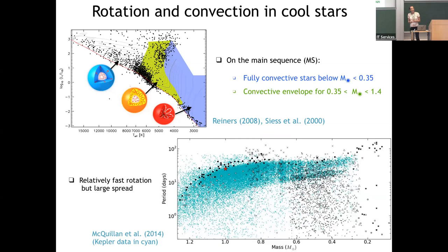Other stars also possess all the ingredients to produce magnetic fields, and we know that many stars are magnetic. This is a typical HR diagram with temperature on the x-axis and luminosity on the y-axis. The dots are stars, and the gray and black lines show the evolutionary tracks followed by stars in this 2D diagram.